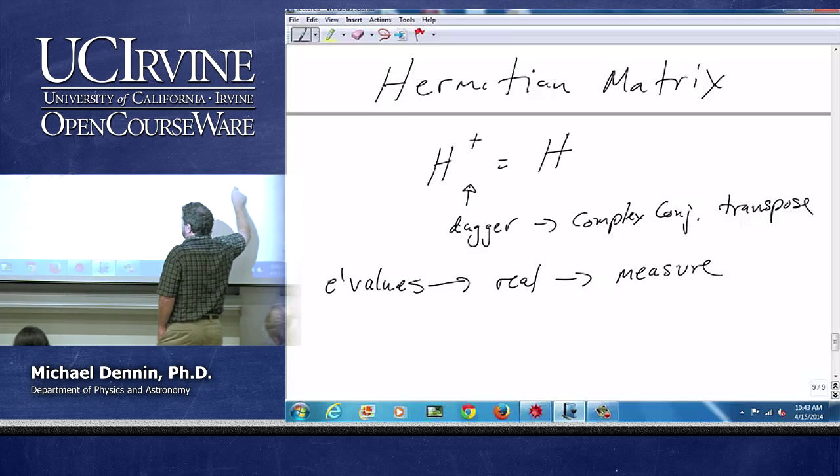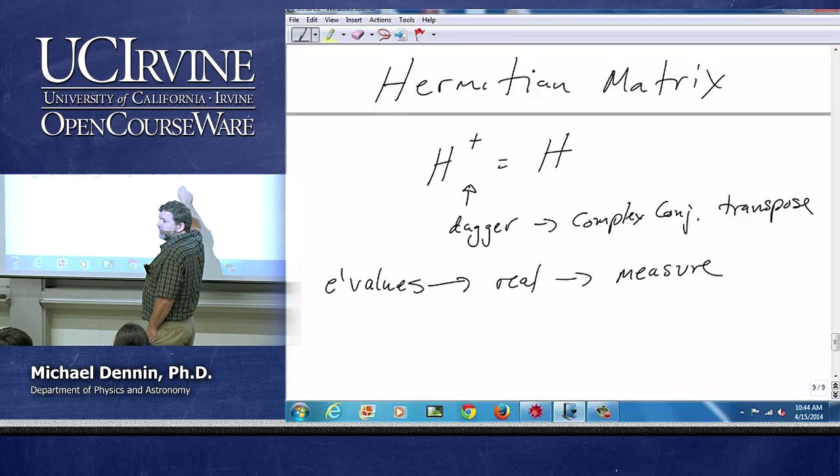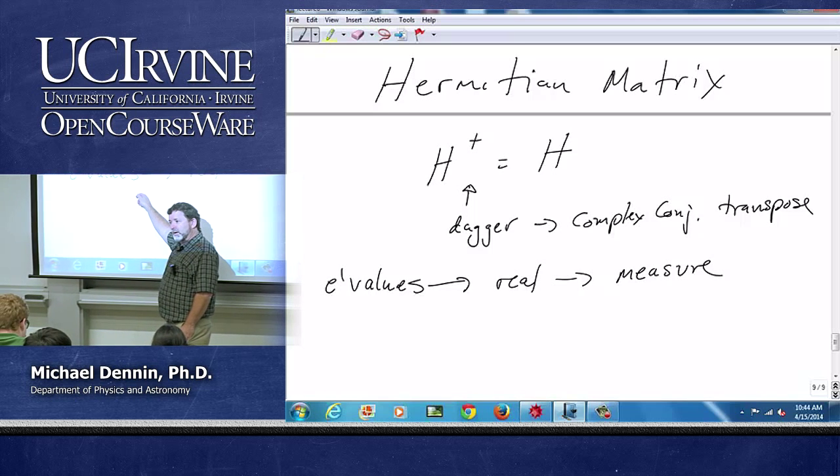all the possible values of what I might measure are the eigenvalues. And since they're always real, they're guaranteed to be. That's nice since I can only measure real numbers.